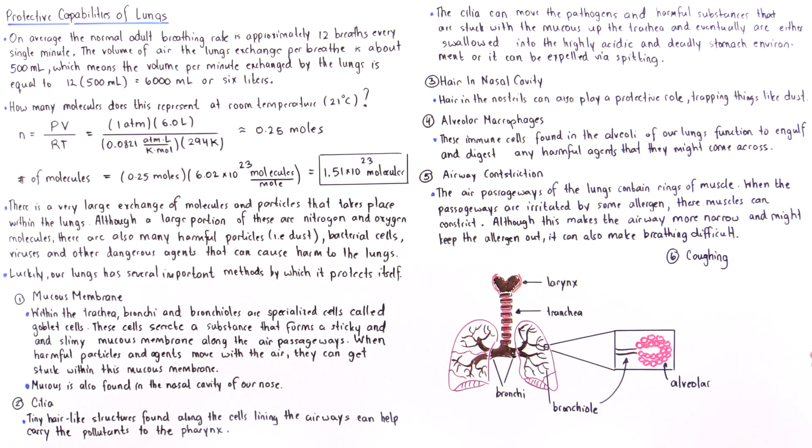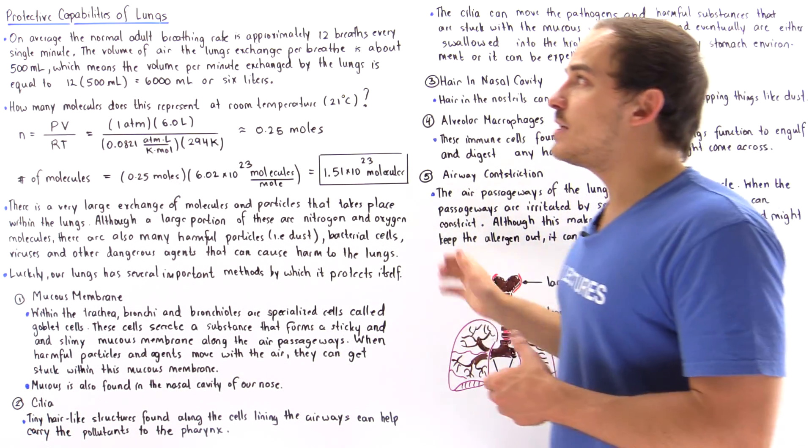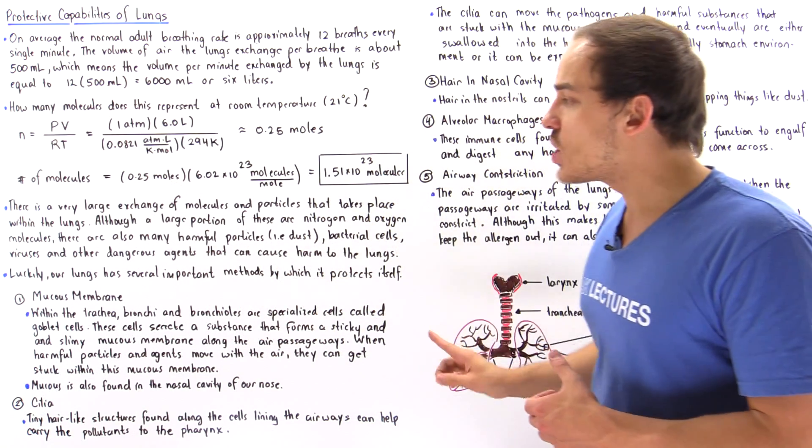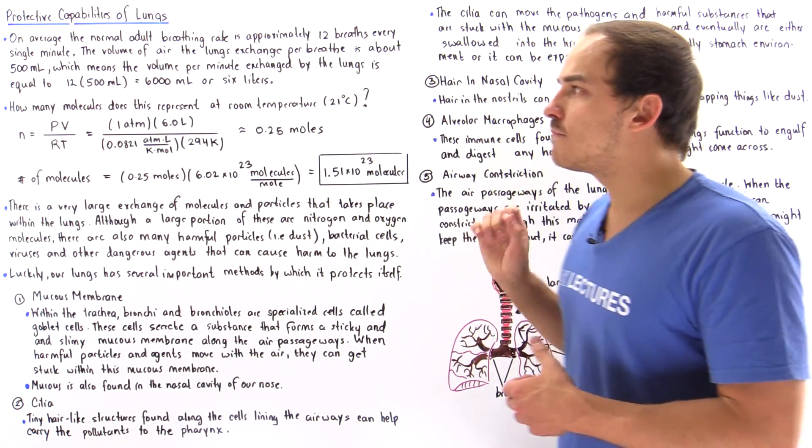These are the six different methods by which our lungs basically protect themselves and our body from these harmful agents and harmful pathogens.